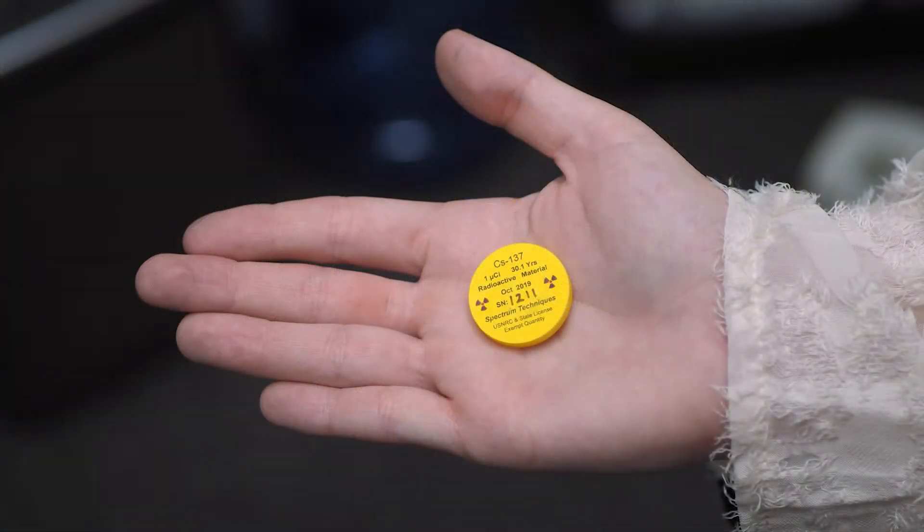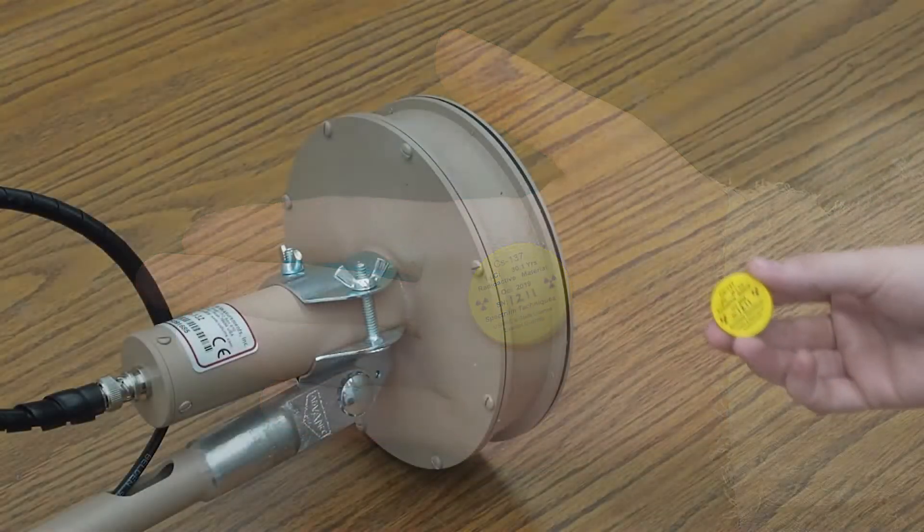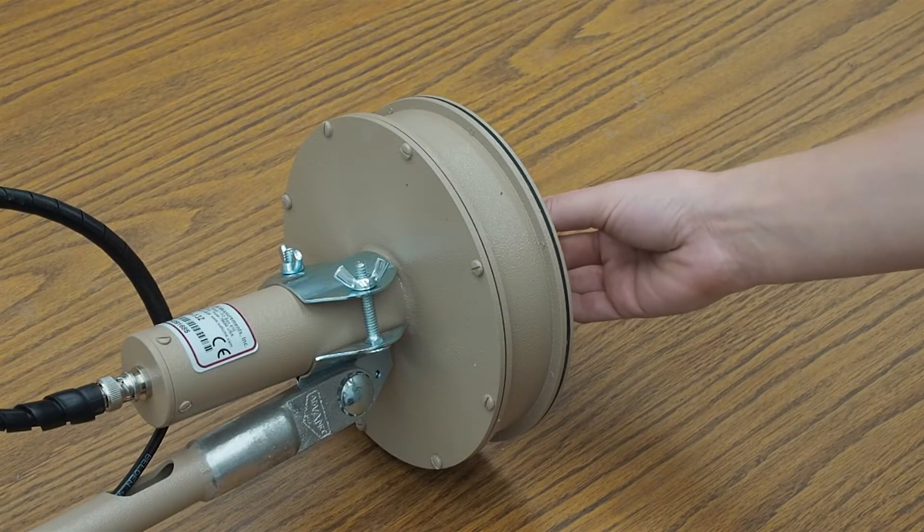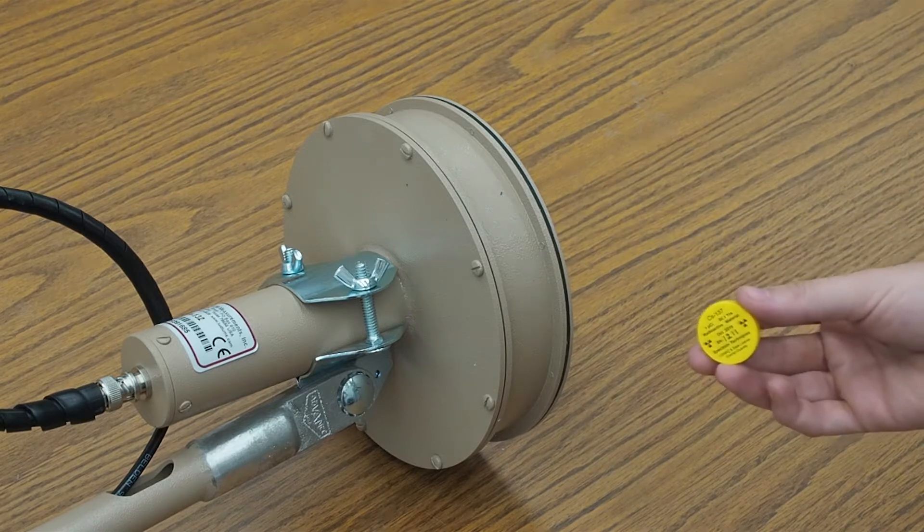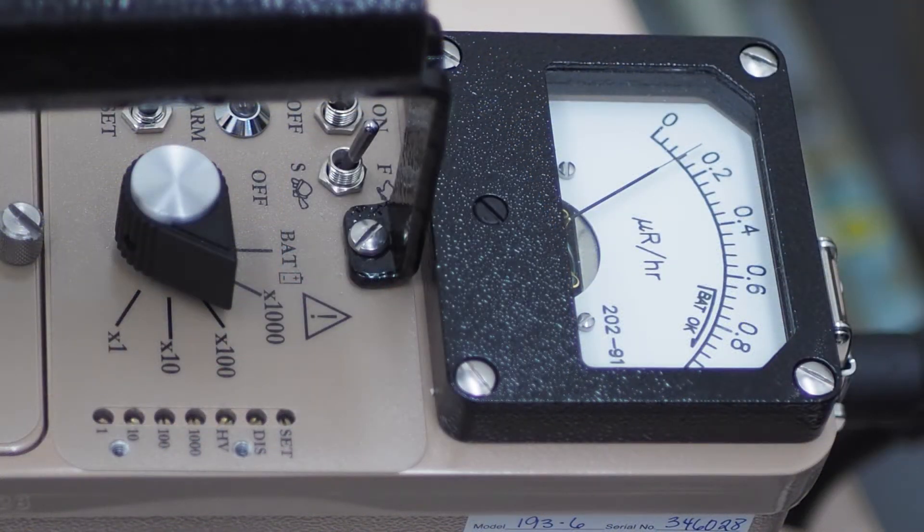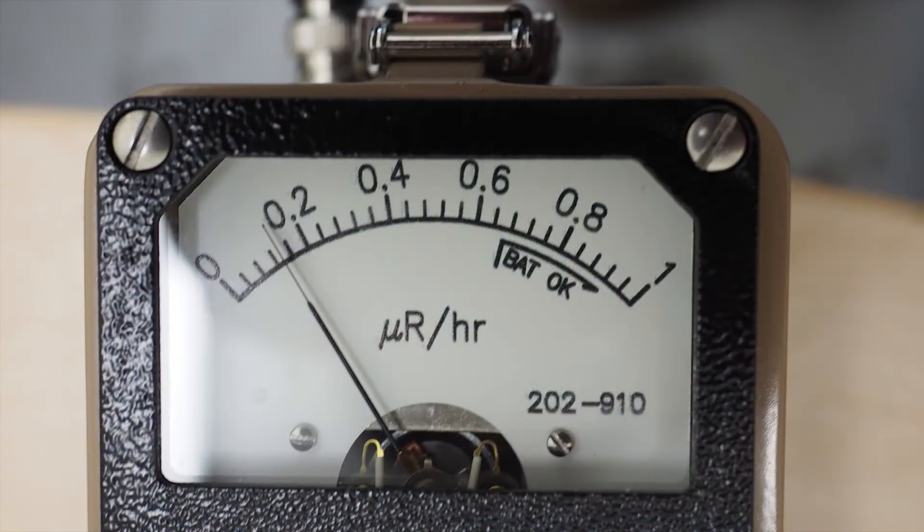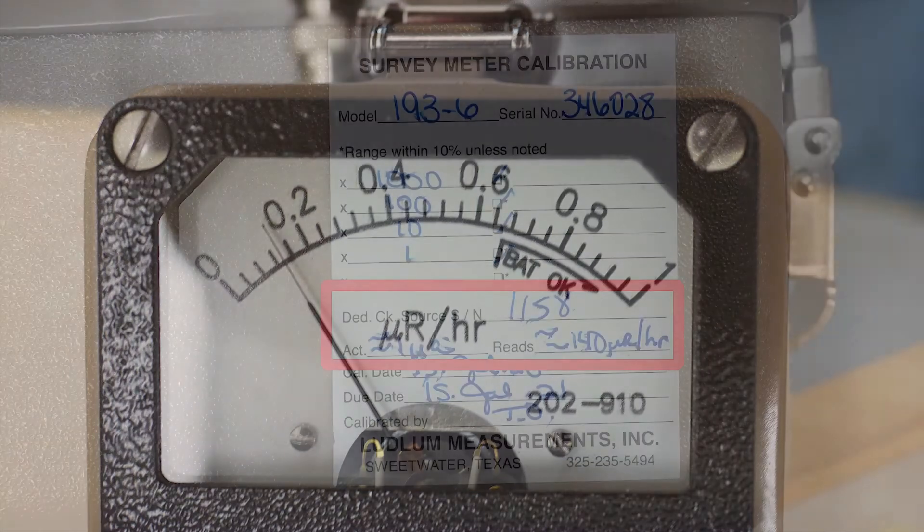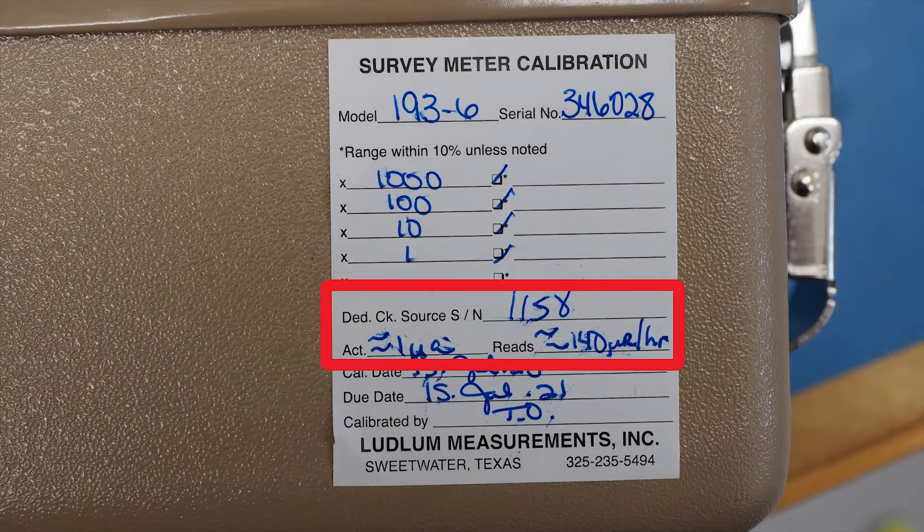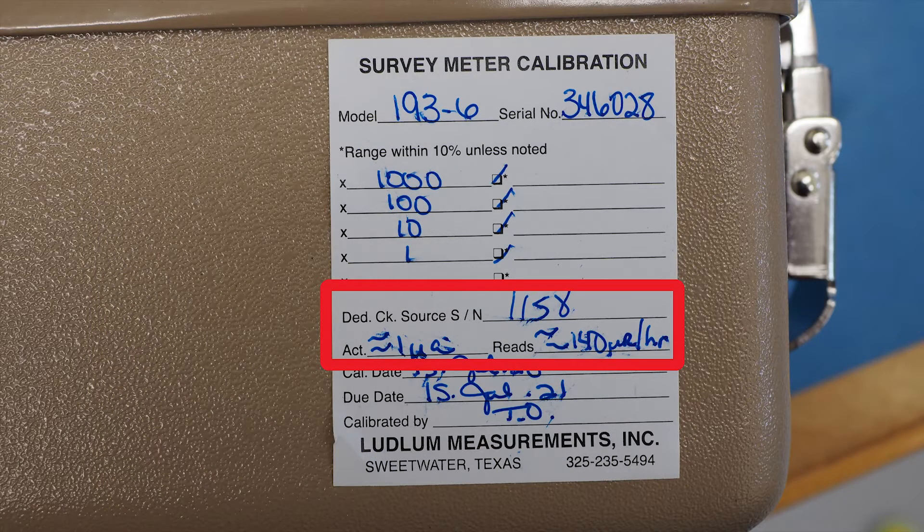If you have a check source, take a reading to see if the instrument reads correctly. Place the source next to the detector and make sure it reads within 20% of the recorded reading. In this example, the meter is indicating approximately 140 µR per hour. The reference check source reading can be found on the Ludlum calibration sticker on the side of the instrument.